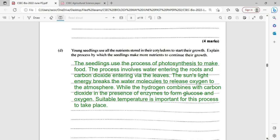So the seedlings use the process of photosynthesis to make food. The process involves water entering the root and carbon dioxide entering the leaf. The sun's light energy will make water molecules break to release oxygen to the atmosphere, while hydrogen will combine with carbon dioxide in the presence of enzymes to form glucose and oxygen.